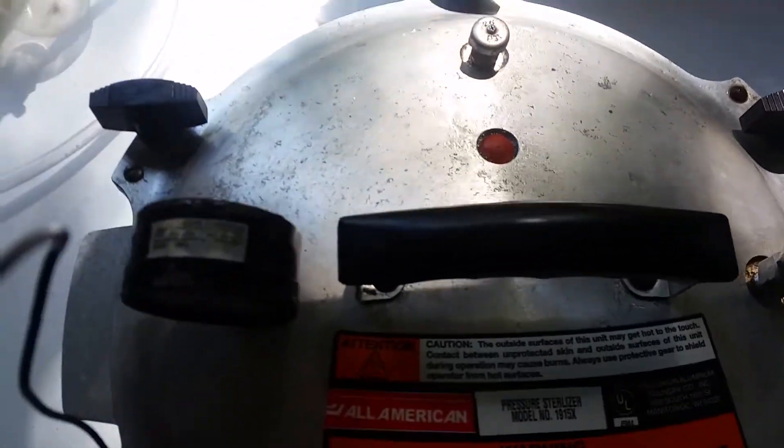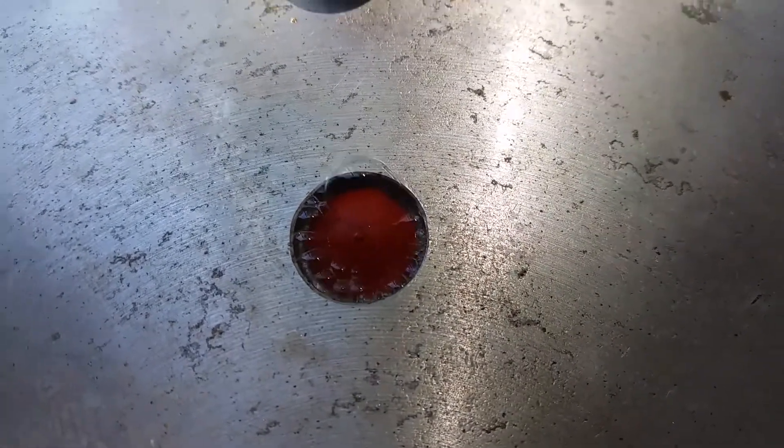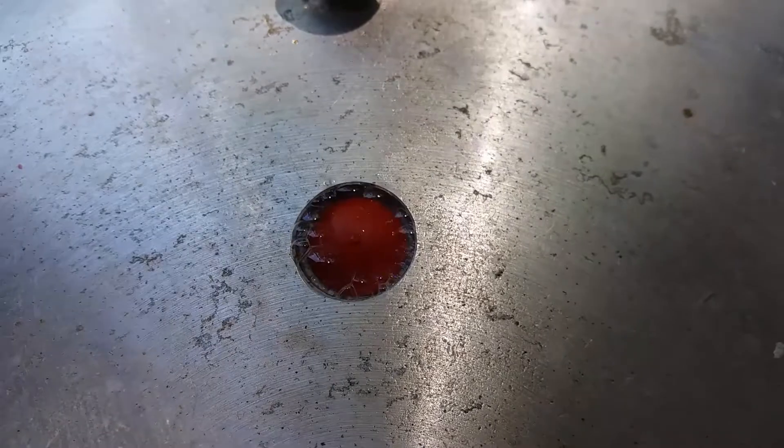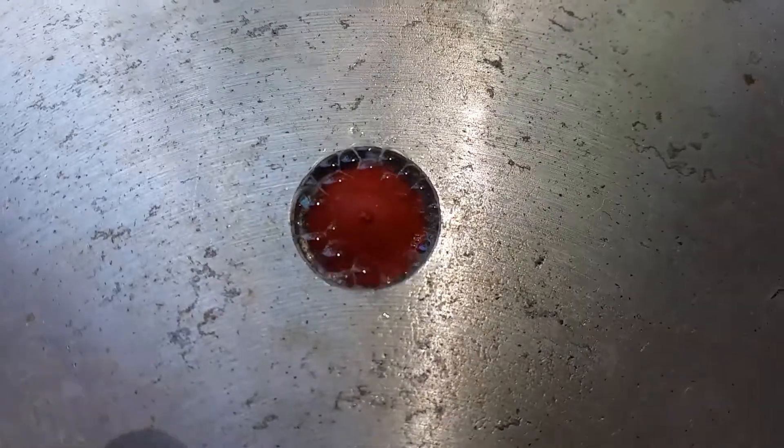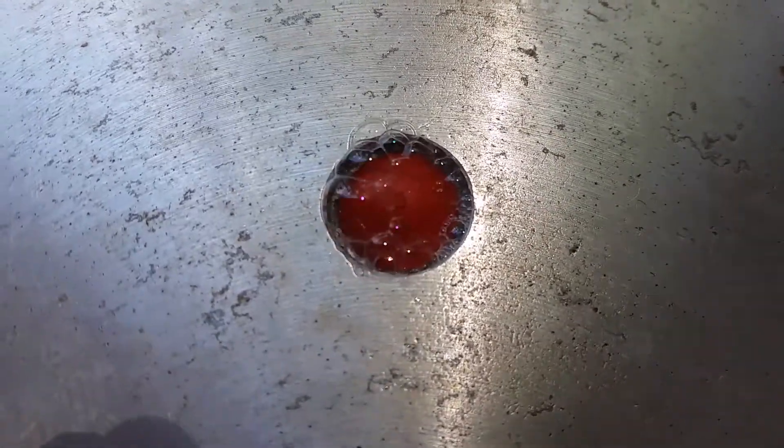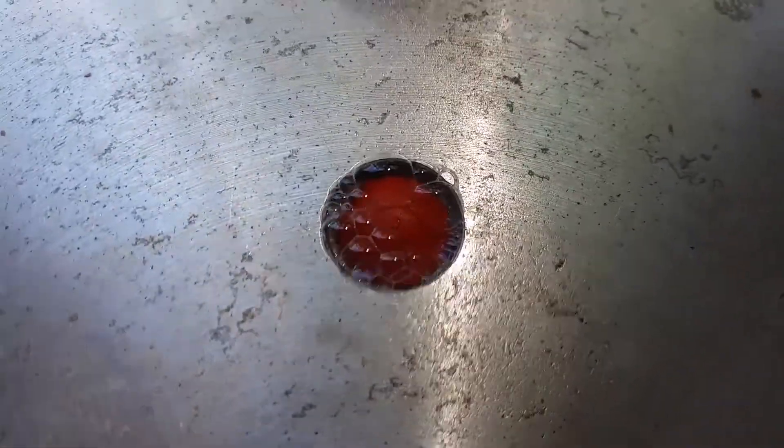So I went ahead and got everything dropped in and let it start pressurizing. And it appears that we have a leak at this safety valve. There was a little bit of water in there just because I washed this, rinsed it off before I stuck it on here. And so there's a bit of water in there. But that's what you see bubbling. So I do not think this is going to get up to pressure, not even a little.